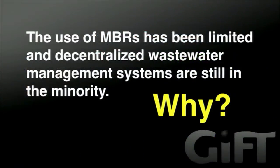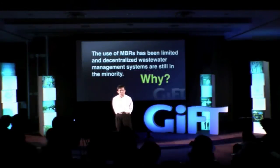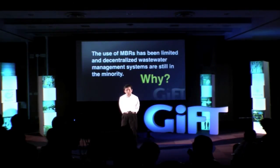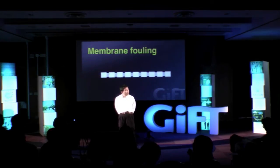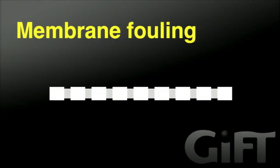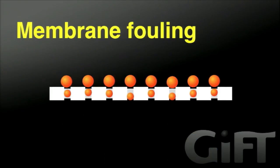In spite of the advantages I have described, the use of MBR has been still limited, and decentralized wastewater management systems are still in the minority. Why? There is a problem in this technology. In long-term operation of a membrane process including MBR, some components will accumulate on and in membranes and permeability will be reduced. This phenomenon is membrane fouling. Membrane fouling increases both operational and initial cost, limiting the wide application of membrane technology. So for widespread use of MBR, we need to address the problem caused by membrane fouling — and therefore, membrane fouling is a very important and hot research topic.